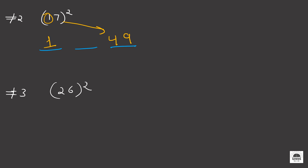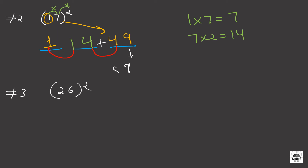Now for the middle blank, we first multiply these two digits and then multiply by 2. So 1 into 7 is equal to 7, and 7 into 2 is equal to 14. So we will write down 14 here. Now for the final step, we just add these two numbers and these two numbers. Our answer is 9, then 4 plus 4 is equal to 8, and 1 plus 1 is equal to 2. So 17 squared is equal to 289.